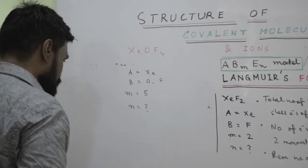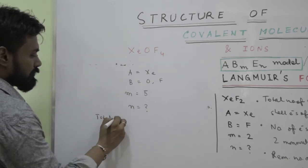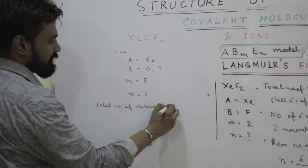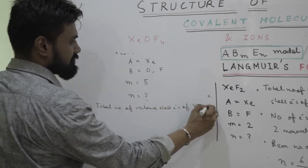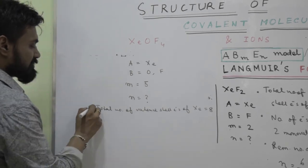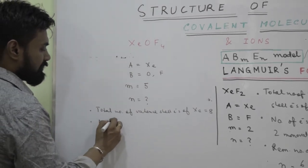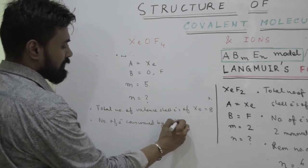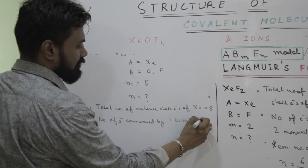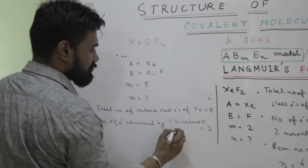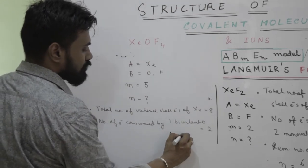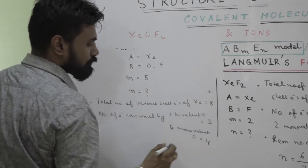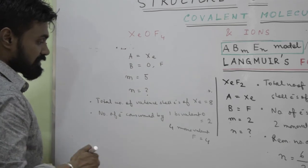Again following the same logic: total number of valence shell electrons of xenon, which is 8. Next, number of electrons consumed by 1 bivalent...